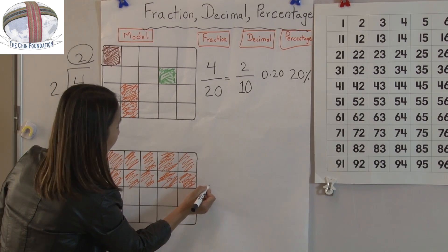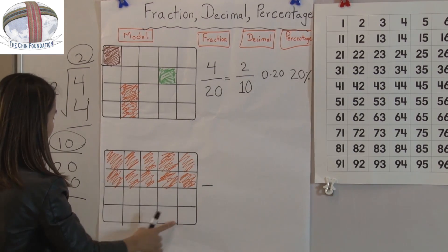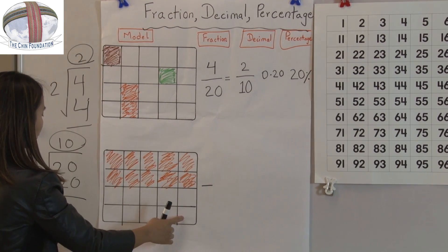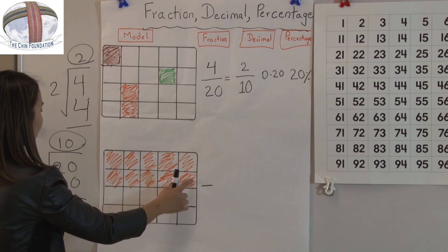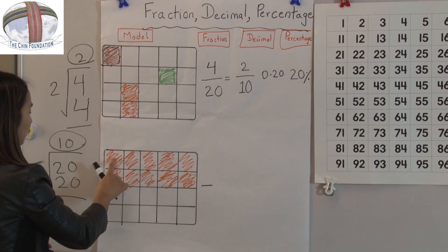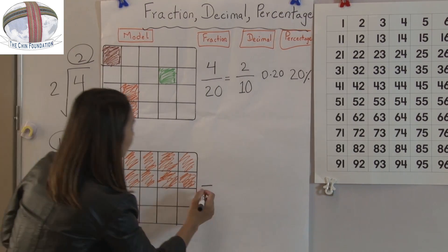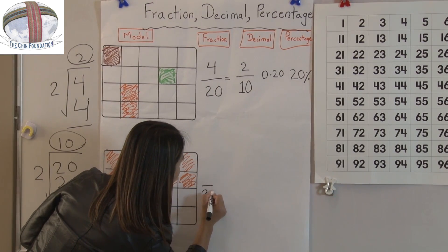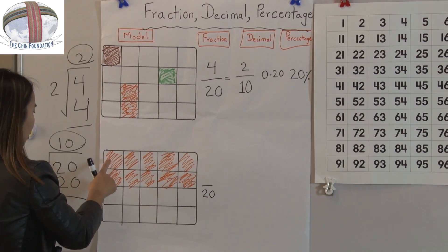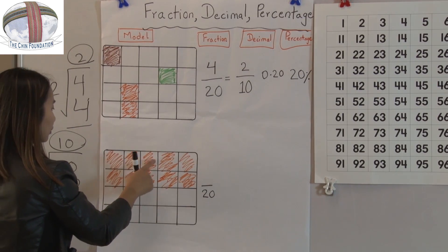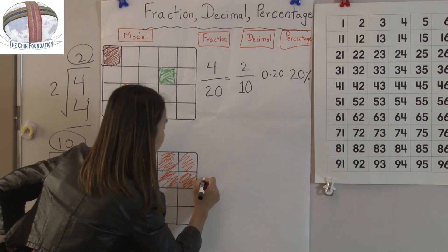Okay, for the next problem, in order to write a fraction, I have to count all of the boxes: 1, 2, 3, 4, 5, 6, 7, 8, 9, 10, 11, 12, 13, 14, 15, 16, 17, 18, 19, 20. Out of how many colored? Count: 1, 2, 3, 4, 5, 6, 7, 8, 9, 10.